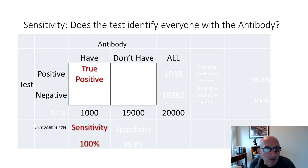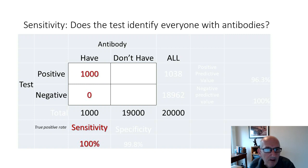When we report a figure of sensitivity, that's talking about the rate of true positives in the group of people who have antibodies — or if this is a general diagnostic test, people who have whatever diagnosis you're looking at. 100% sensitive means that everybody who has the antibody tests positive, so it's 100% sensitive.